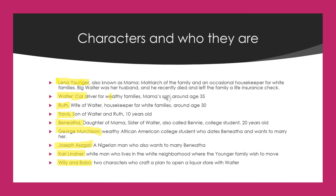George Murchison is a wealthy African-American college student who dates Benita and wants to marry her. Joseph Asagai is a Nigerian man who also wants to marry Benita. Carl Lindner is a white man who lives in the white neighborhood where the Younger family wishes to move. Willie and Bobo are two characters who craft a plan to open a liquor store with Walter. The play doesn't have many characters — the core is really just the main four characters, plus some minor characters who are still very important to the play.